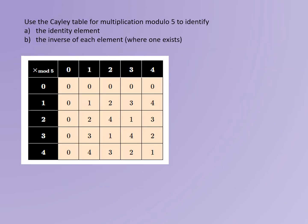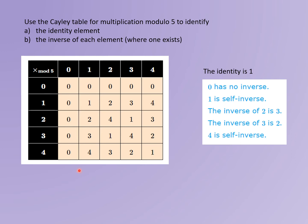Therefore, 1 is the identity element for multiplication mod 5, because 1 leaves all other elements unchanged under the operation. 0 has no inverse because 0 will not multiply by any other element to give an answer of 1. 1 is self-inverse because 1 multiplied by 1 gives 1. The inverse of 2 is 3 because 2 multiplied by 3 is 1 mod 5, and similarly the inverse of 3 is 2. 4 is also self-inverse because 4 times 4 is 1 mod 5.